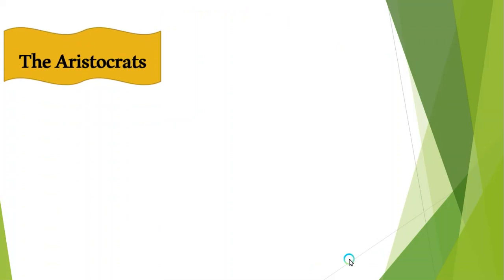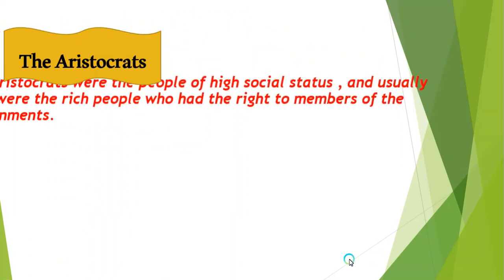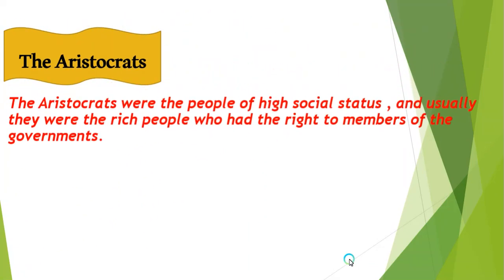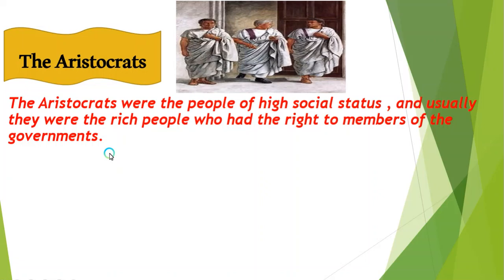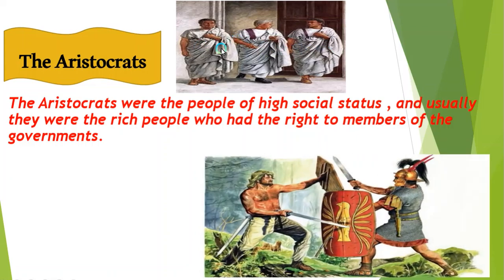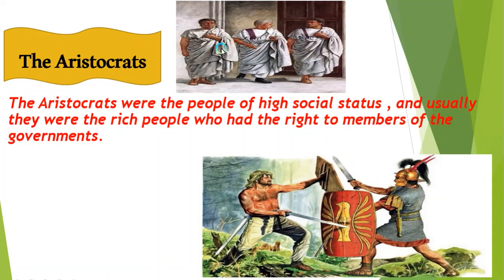The aristocrats were people of high social status, and usually they were the rich people who had the right to be members of the government at that time. As we can see here, this shows their clothing, which was very distinctive and a symbol of wealth. The Roman Empire also engaged in many wars and conflicts.